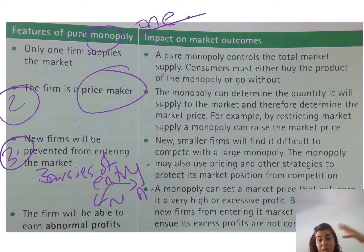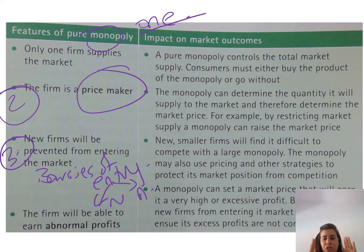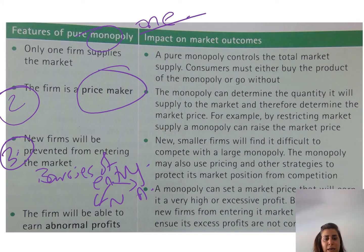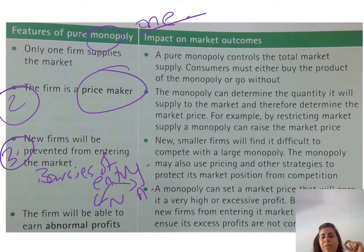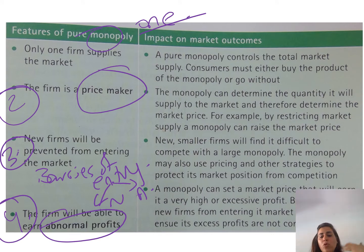We will talk about barriers to entry in more detail later. The monopoly would not want any new firm to enter the market and compete with them, because when competition occurs, prices will automatically decrease. Since they are the price makers and the only ones producing that particular product, the last feature is that they are making abnormal profits — meaning they are making excess profits.